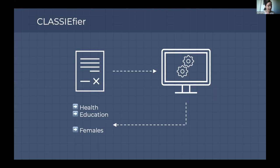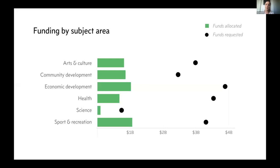In a SmartyGrants sense, the ability to auto-classify all grants means we can start to look at where the money is going. This is a project we're working on — trying to understand the funding flows through SmartyGrants. We're trying to see: where's the money going? Is it mostly in the arts, health, science? And where is the unmet demand? You can see we've got many more funds requested than funds allocated — that really indicates a shortfall where people are applying and not getting funding.